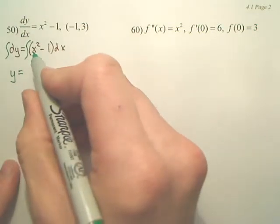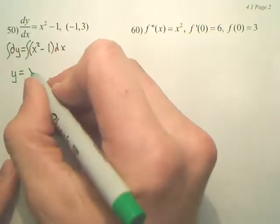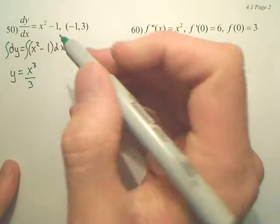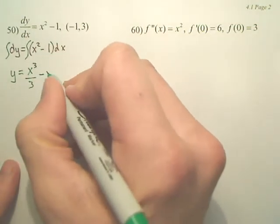What's the integral of x squared? Well, you add 1 and divide by it. So this is x to the third over 3. And what's the integral of 1? It's simply x.